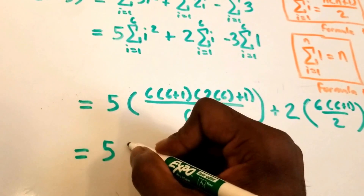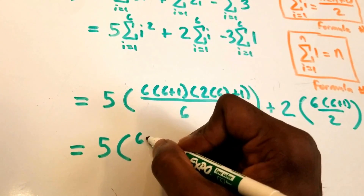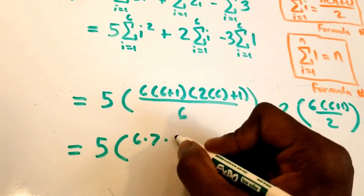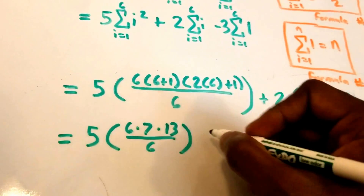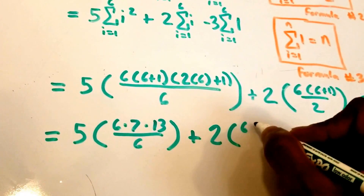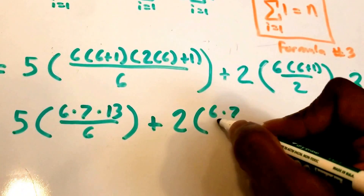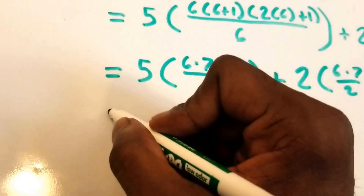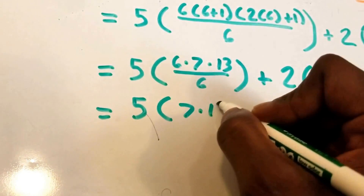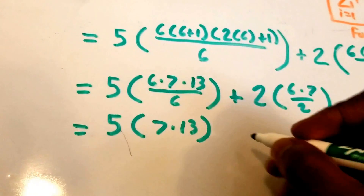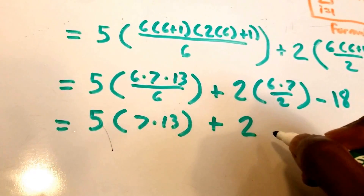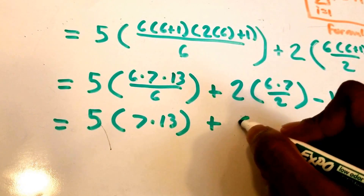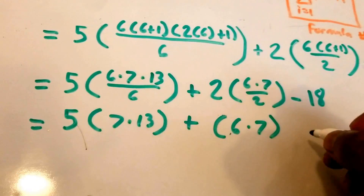Let's reduce this. We get 6 times 7 times 13 over 6, and the 6s cancel, giving 5 times 7 times 13. Then plus 2 times 6 times 7 over 2, which simplifies to just 6 times 7. And then minus 3 times 6 is 18, so we have 5 times 7 times 13 plus 6 times 7 minus 18.